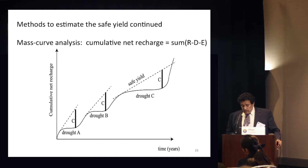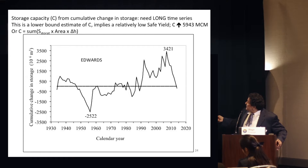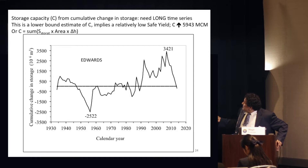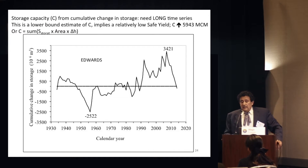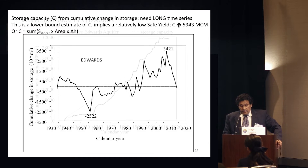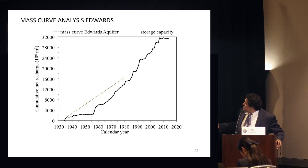Here is an interesting result for the Edwards Aquifer. Notice the cumulative change in storage — this is the maximum observed over 80 years and this is the minimum. There is always groundwater left in the aquifer, so by subtracting minimum from maximum it gives a storage capacity of about 6,000 million cubic meters — though this is a lower bound, which is very important. Applying that method to the Edwards Aquifer, you input your estimate of the storage, trace a tangent that intersects the curve, and that gives you the safe yield.